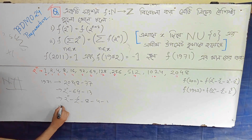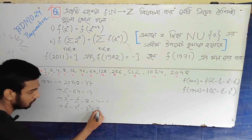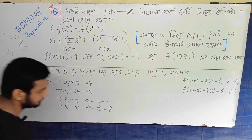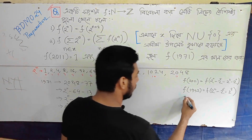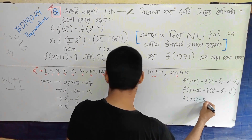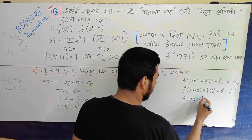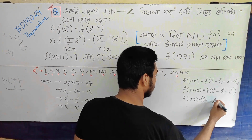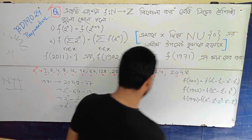1971, so you can see 2 to the power 6 minus 2 to the power 3 minus 2 to the power 2 minus 2 to the power 0. So this is f of 1971, which is f of 2 to the power 11 minus 2 to the power 6 minus 2 to the power 3 minus 2 to the power 2 minus 2 to the power 0.